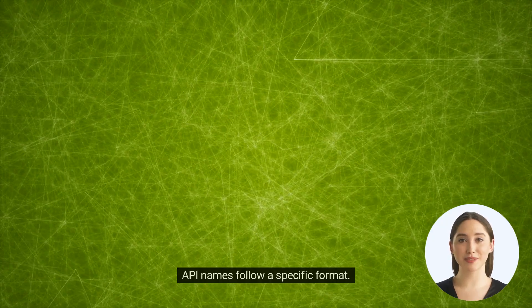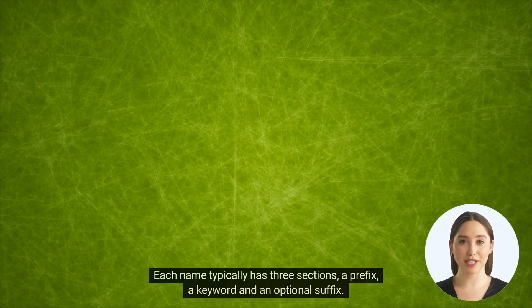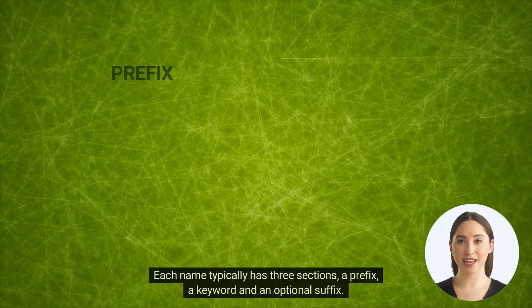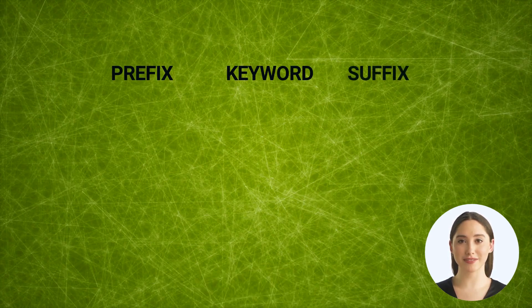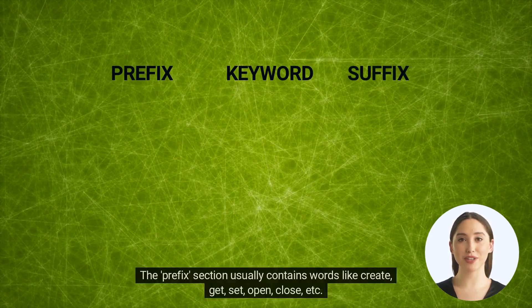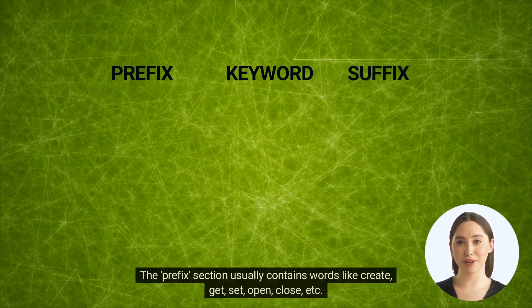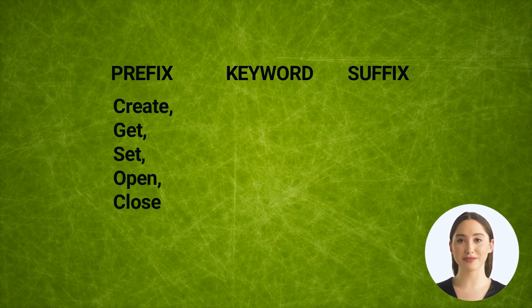API names follow a specific format. Each name typically has three sections: a prefix, a keyword, and an optional suffix. The prefix section usually contains words like create, get, set, open, close, etc.